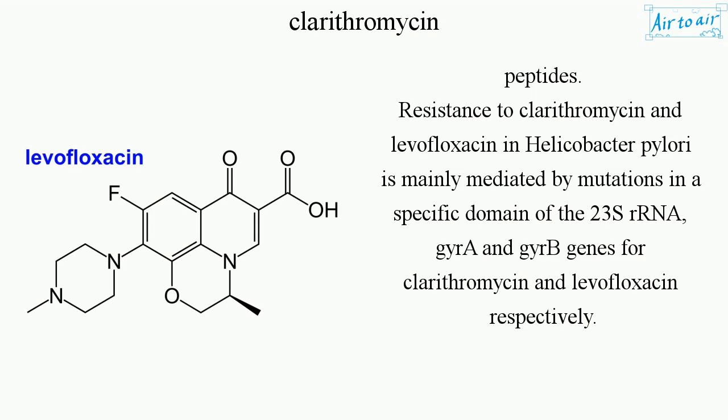Resistance to clarithromycin and levofloxacin in Helicobacter pylori is mainly mediated by mutations in a specific domain of the 23S rRNA, and gyrA and gyrB genes for clarithromycin and levofloxacin respectively.